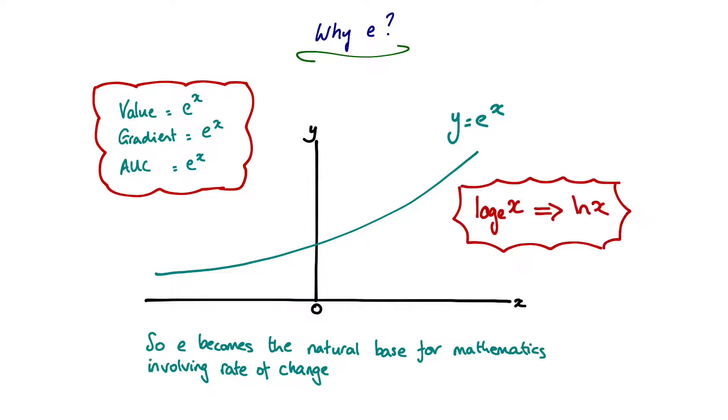So much so that using the natural logarithm, i.e. log to the base E, has its own nomenclature. Whereas you would normally write log to the base 10 of X, or log to the base 2 of X, if you're using log to the base E, you don't write log to the base E of X, you write LN X. LN stands for logarithmus naturalis. It's got its own nomenclature and that can throw you if you've not come across that before.